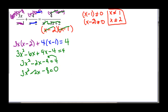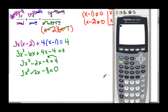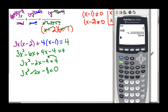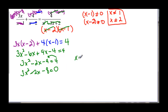Here's a neat trick: if you have the quadratic formula in your calculator, hit the program key and run it. Enter a equals three, b equals negative two, and c equals negative eight. The calculator gives x equals two and x equals negative four-thirds. That ugly decimal negative 1.333... is actually negative four-thirds.